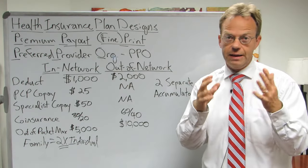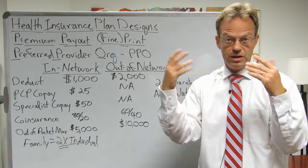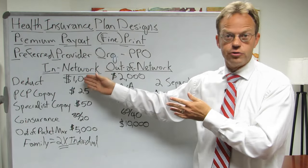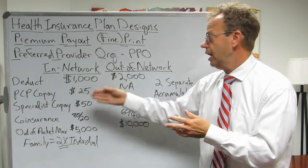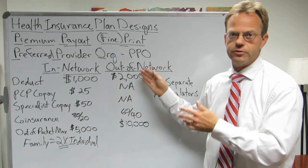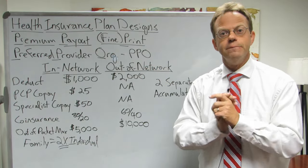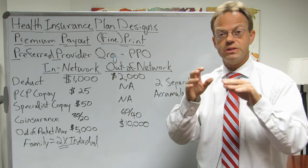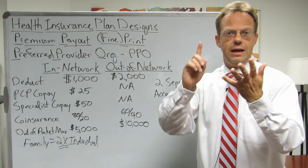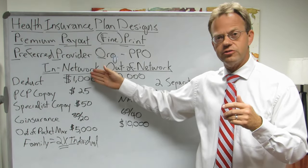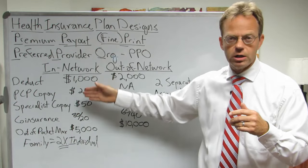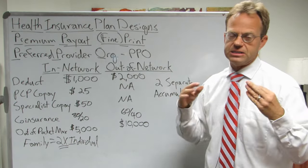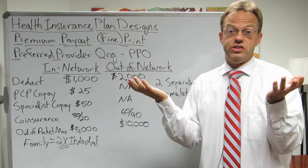In a PPO plan, this is going to be through Blue Cross, United, Cigna, Aetna — the major health insurance companies. They're going to have in-network doctors, hospitals, physical therapists, and imaging facilities, and they're going to have out-of-network doctors, hospitals, and imaging facilities. In-network providers have agreed to a negotiated discount with the health insurance company; out-of-network providers have essentially agreed to zero discount.